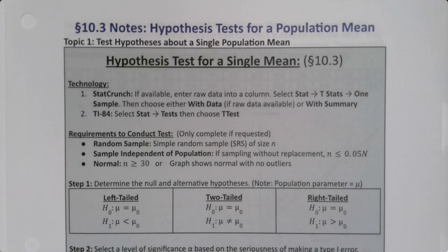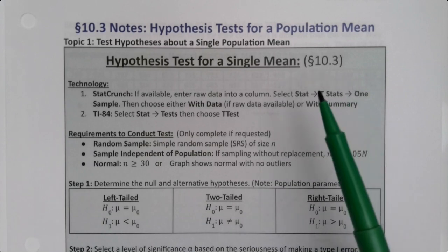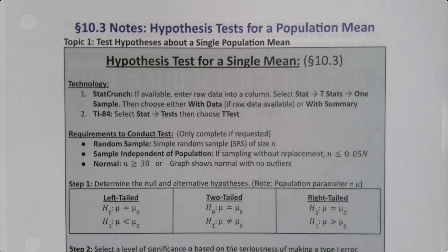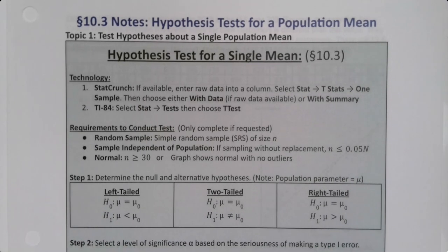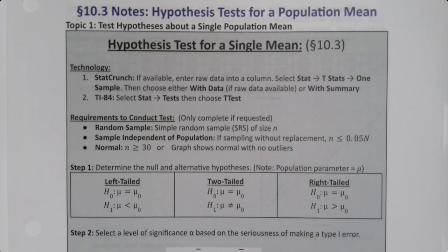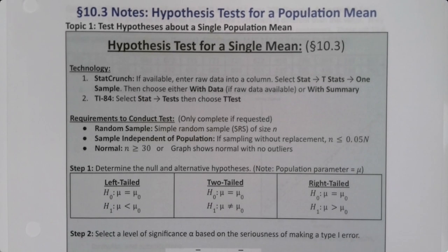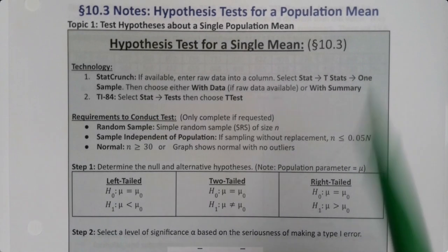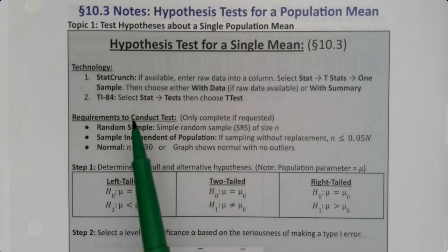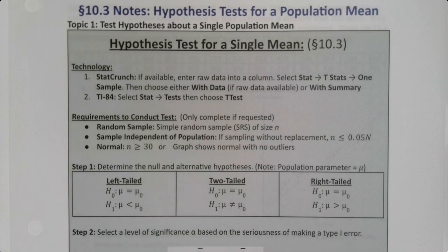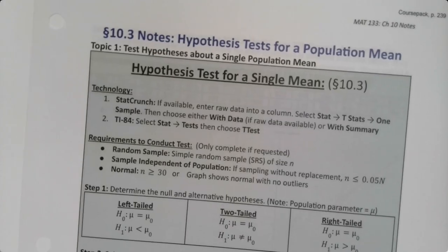In section 10.3 we want to apply our newfound hypothesis test knowledge to a new parameter, namely the one for the population mean mu. So this is going to be a hypothesis test for a single mean and again we have a whole sheet of reference here that we're going to use and refer back to regularly. It's also available in your exam notes packet. There's the technology piece right here and then the requirements to conduct the test and so on.